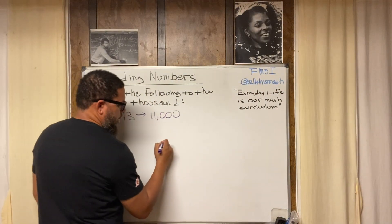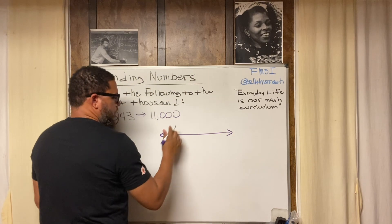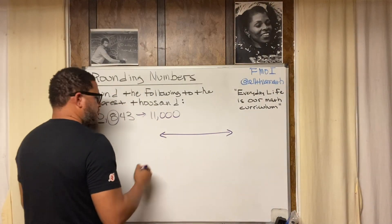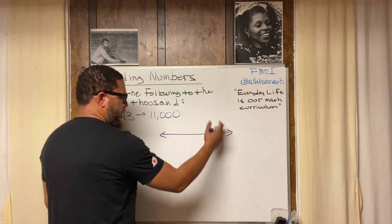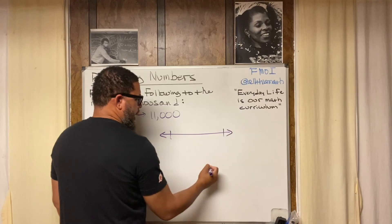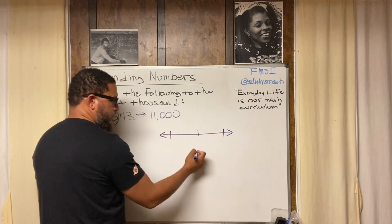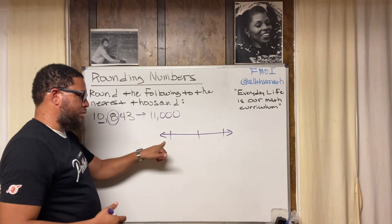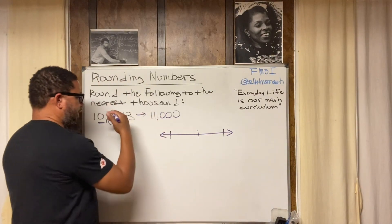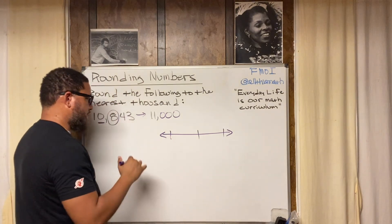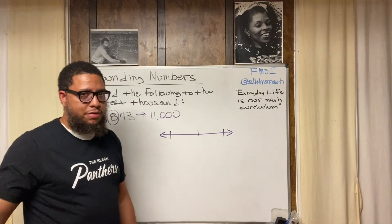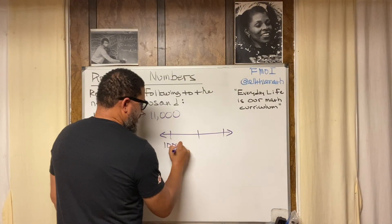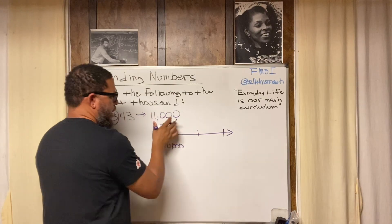For the number line, we draw a horizontal line and put three hash marks: one to the far left, one to the far right, and one in the middle. The far left is the nearest thousand below 10,843, which is 10,000. The far right is the next larger thousand, 11,000. We're not dealing with 9,000 or any other thousand because 10,000 is the closest one less than 10,843.